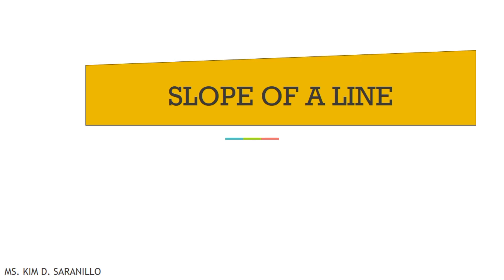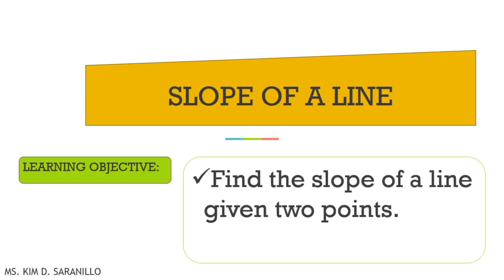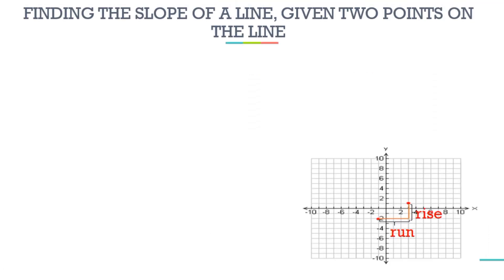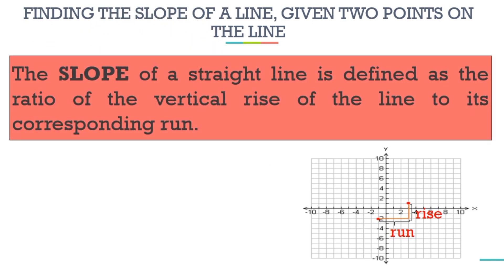Let's start our new discussion on slope of a line. Before we deepen our understanding, let's look at our learning objective. At the end of this lesson, you need to find the slope of a line given two points. We hope that by the end of this discussion, you will be able to attain this objective. So let's start discussing finding the slope of a line given two points on the line.